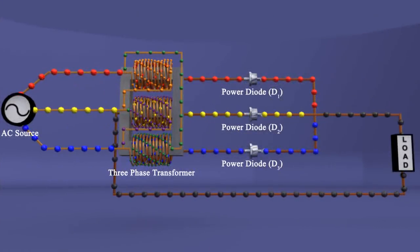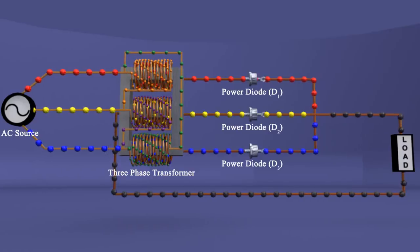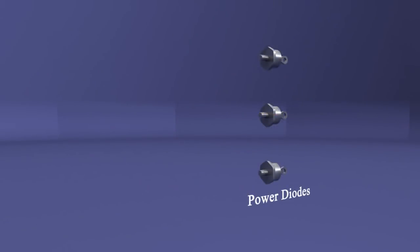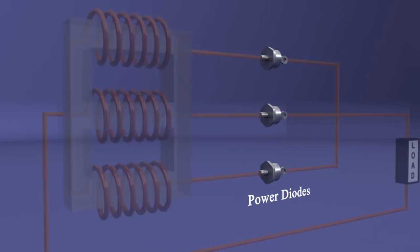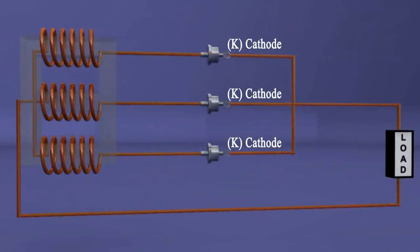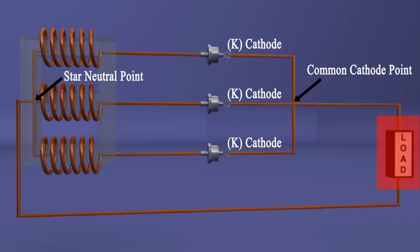It consists of three diodes, and their anode terminals are connected to the secondary winding of a three-phase transformer. The DC load is connected between the common cathode point and neutral terminal of the star-connected secondary winding.